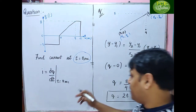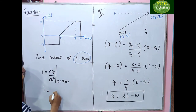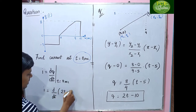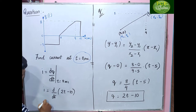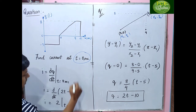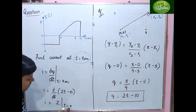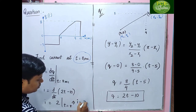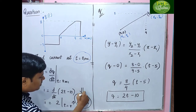The current I = d/dt(2t − 10) = 2. Since there is no t variable in the result, the current at t = 8 seconds is I = 2 Amperes.